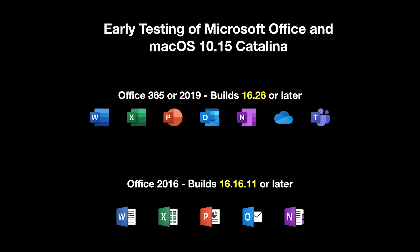What impact does 10.15 have on you as the Mac Office IT administrator? First up, our goal is to have full Office compatibility and production level support on the same day that Apple releases the general availability of Catalina sometime in the fall. If you have access to the Catalina beta seeds today, you can go ahead and install Office. You'll need a minimum of 16.26 for either Office 365 or Office 2019. And if you're using the older generation 2016 product, you need a minimum of 16.16.11.